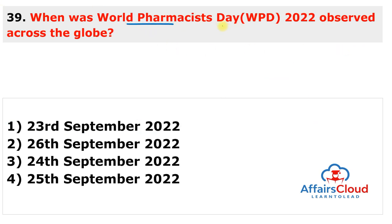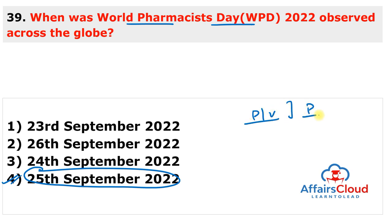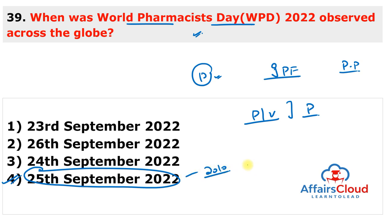World Pharmacist Day 2022 was observed on 25th September 2022 to encourage pharmacists, value their contribution, and raise awareness about their profession. It is annually led by the International Pharmaceutical Federation. The theme of World Pharmacist Day 2022 was 'Pharmacy United in Action for a Healthier World.' This day was first observed in 2010 on 25th September.